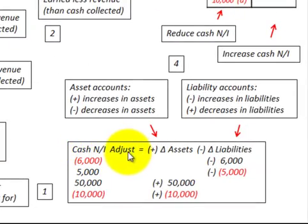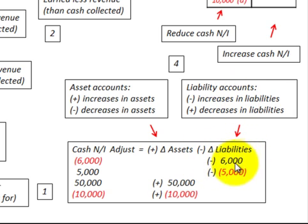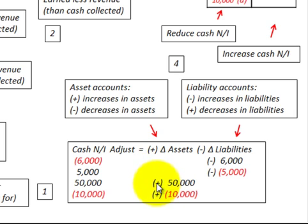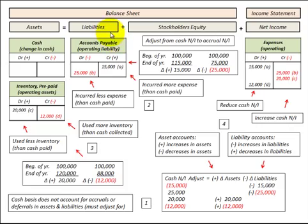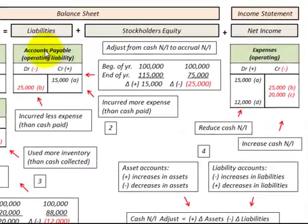Looking at our accounting equation: cash net income adjustment equals adding any changes in assets and subtracting any changes in liabilities. Where we had an increase in liabilities we subtract that; where we had a decrease in liabilities we add that. For assets, any increase we add, and any decrease we subtract.